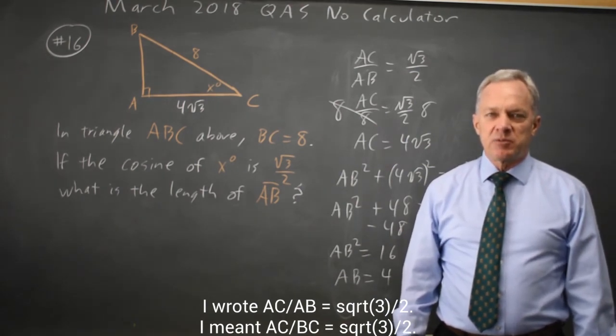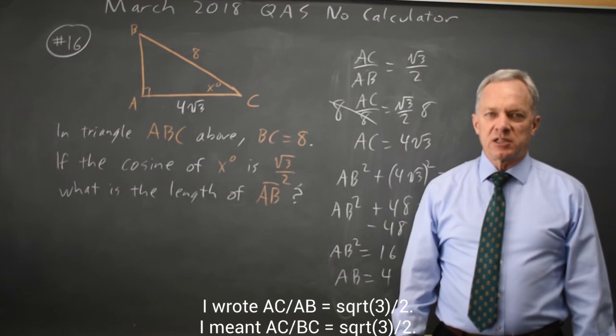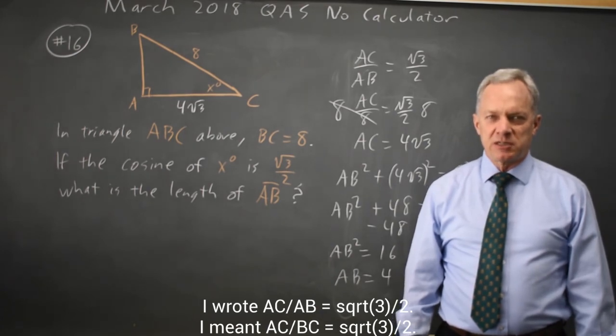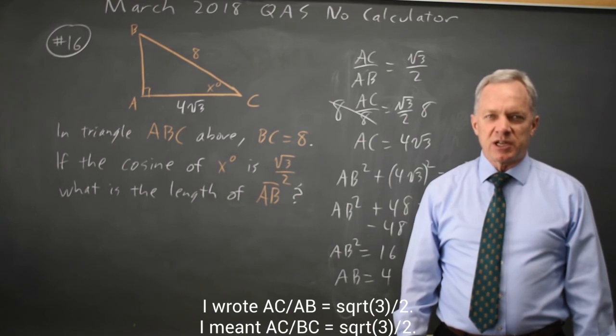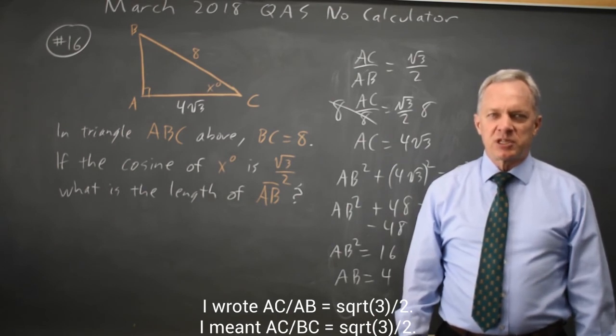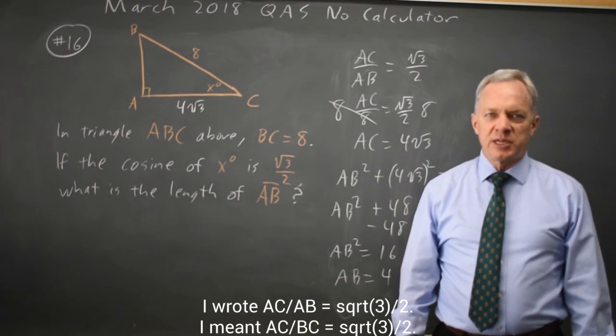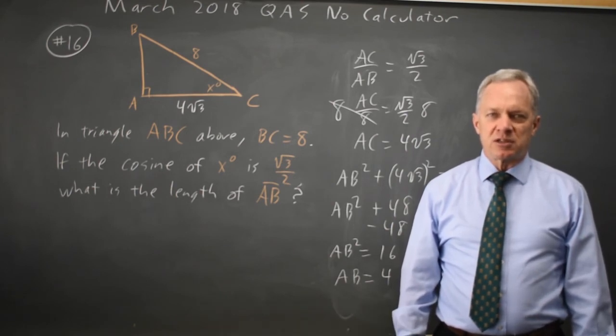So either way, we get the same result, that the short leg of this triangle is half the length of the hypotenuse. Make sure you've reviewed your special right triangles, and you'll recognize them when they come up in this form, along with your memorized trig values. Come back soon for my next video. With math, there's always more.